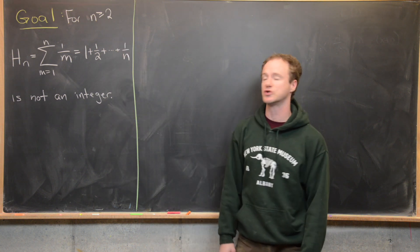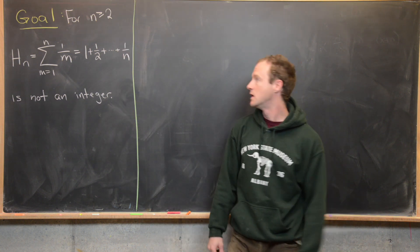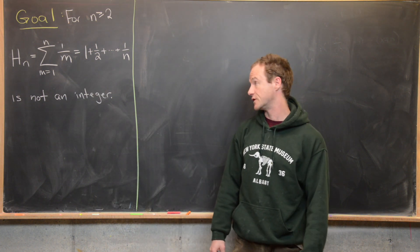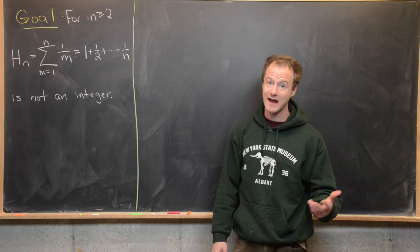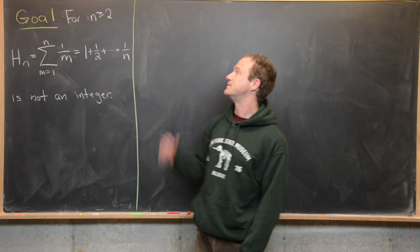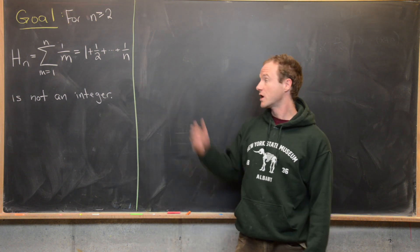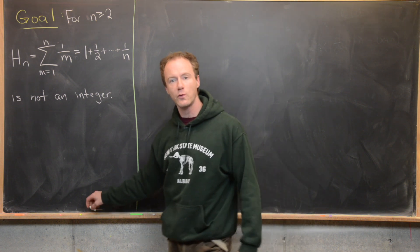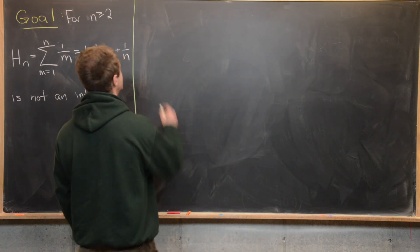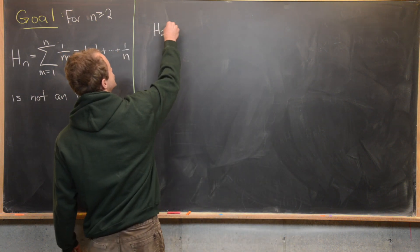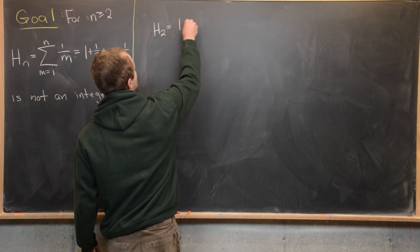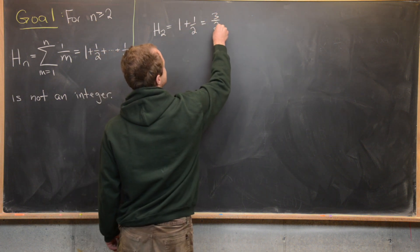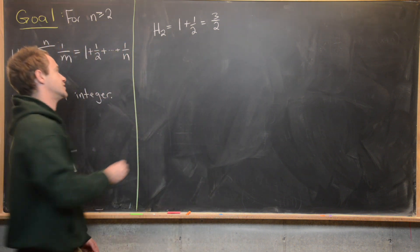Obviously if n equals 1, this truncates at 1, and 1 is an integer, so we're good in that case. But if n is bigger than or equal to 2, we're going to show it's not an integer. Before we do that, let's do a little exploration. So H2 is 1 plus 1/2, which we can write as 3/2 — clearly not an integer.